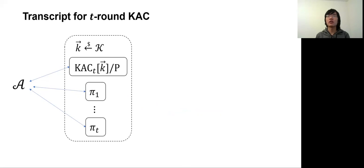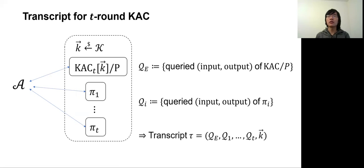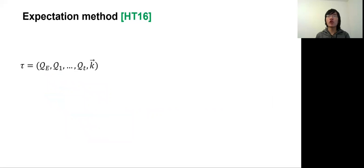To prove an indistinguishability result, we follow the framework from previous works and operate on the transcript level. Given an adversary A that interacts in either the real or ideal world, we collect all queries submitted to the cipher construction or the independent random permutation into a set Q_E, and all queries to each public random permutation pi-i into sets Q_i. We then put the query record sets Q_E, Q_1 to Q_t, and a randomly sampled master key together as a transcript tau generated by A during the interaction.